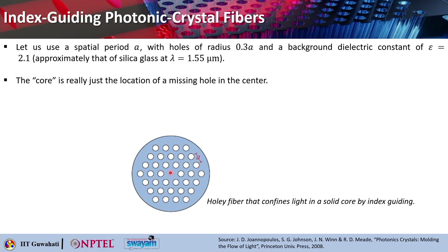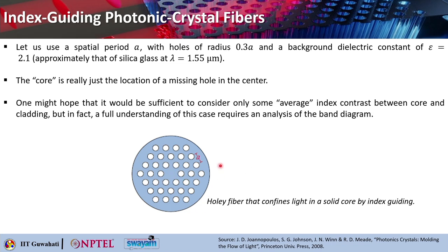What is happening at the core? The core is simply the location with a missing hole in the center. You can ideally think of the same air hole being placed there to make a completely uniform holey array or 2D photonic crystal. But if you introduce a defect by removing this air hole, then you create the solid core for this holey fiber. One might hope it would be sufficient to consider some average index contrast, but in fact you require a full understanding of the band diagram to analyze how the holey fiber can guide light.